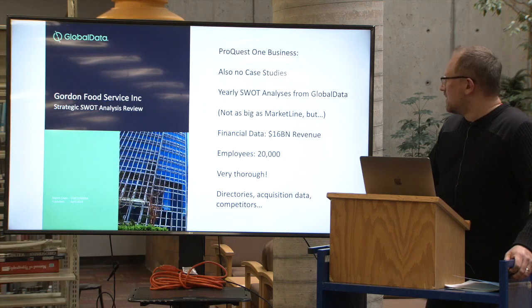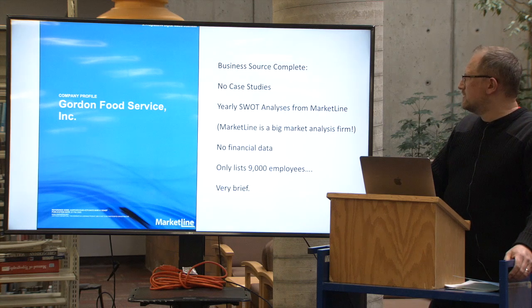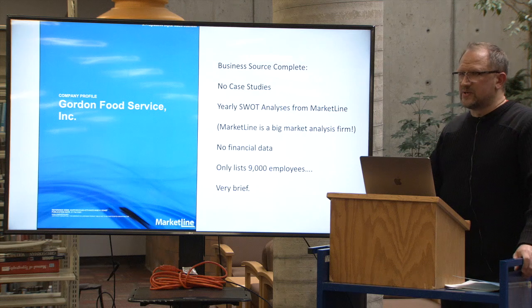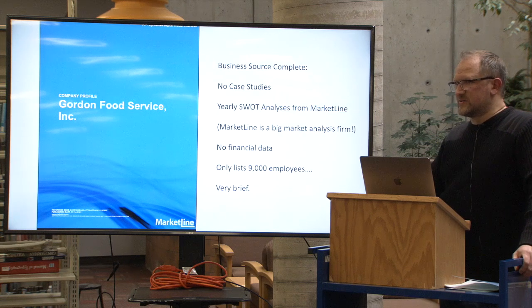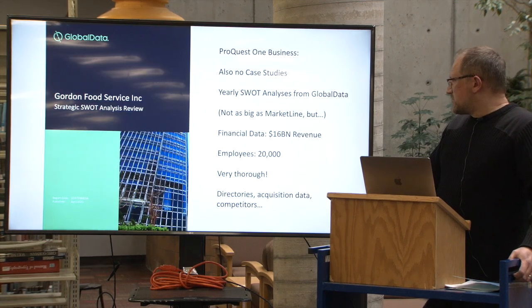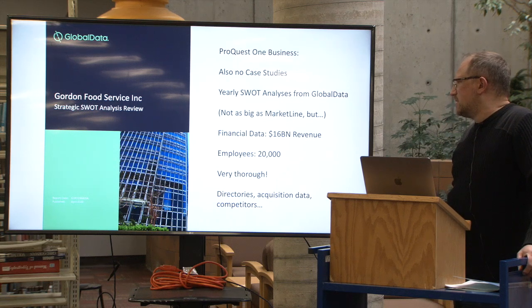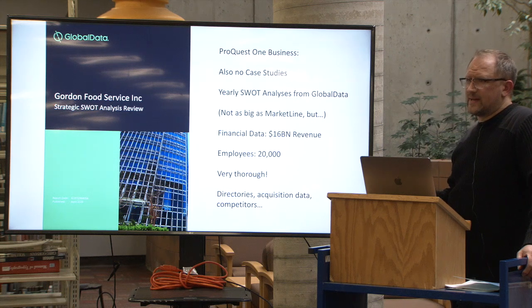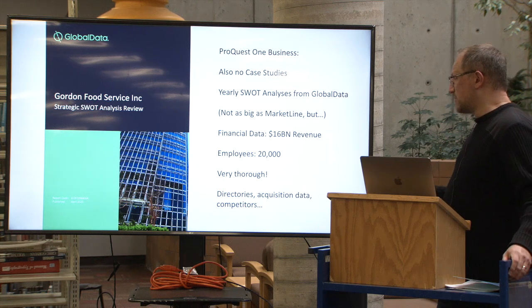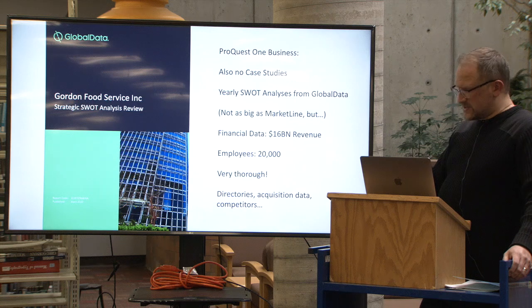Going back to Gordon Food Service: the MarketLine SWOT lists 9,000 employees — we're keeping note of this to compare numbers at the end. GlobalData reports 20,000 employees, which is much closer to what Gordon Food Service reported on their website. GlobalData shows 16 billion dollars in revenue. The report is quite thorough — it has corporate directories, acquisition data, and competitors, making it a more robust report overall.